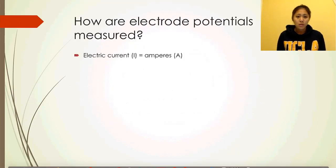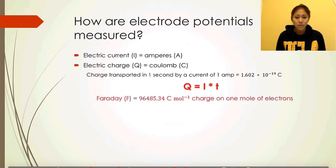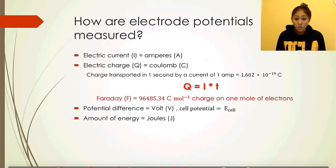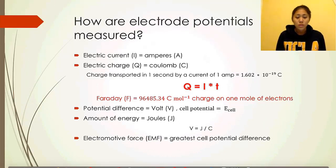Recall we looked at a few of these physics terms early on in the unit. Electric current is in amperes, electric charge is in coulombs. The equation for calculating charge is current times time. Faraday's constant is around 96,485 coulombs per mole, charge on one mole of electrons. Potential difference is in volts, amount of energy in joules, and the electromotive force is the greatest cell potential difference.